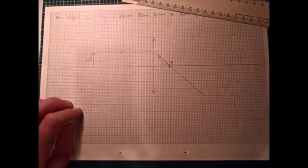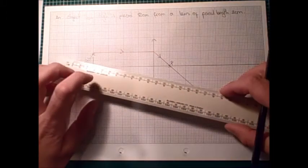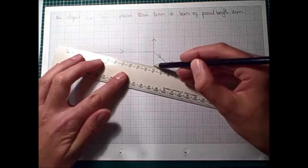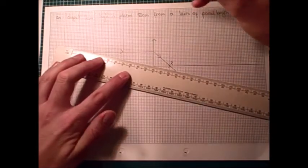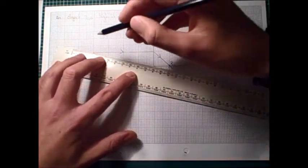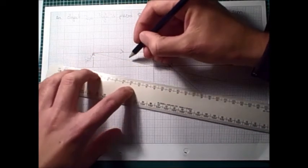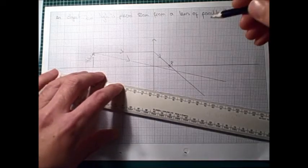So that's our first special ray drawn in. Our second special ray is the one that goes from the top of the object right through the centre of the lens. And this one is special because it doesn't refract. It doesn't change direction. So this one we can do in one big go straight through.